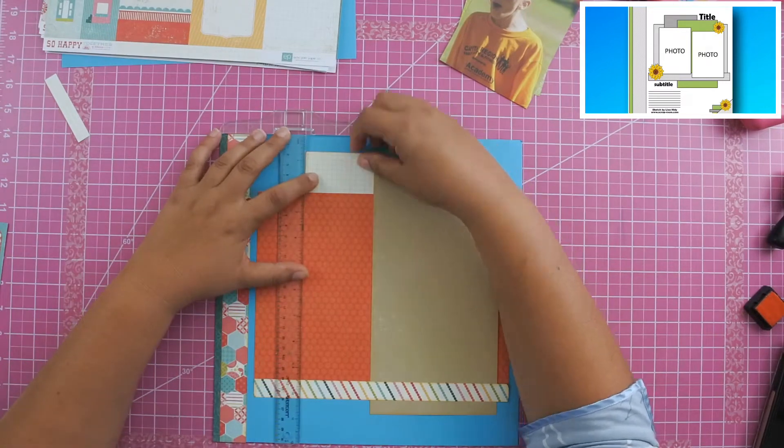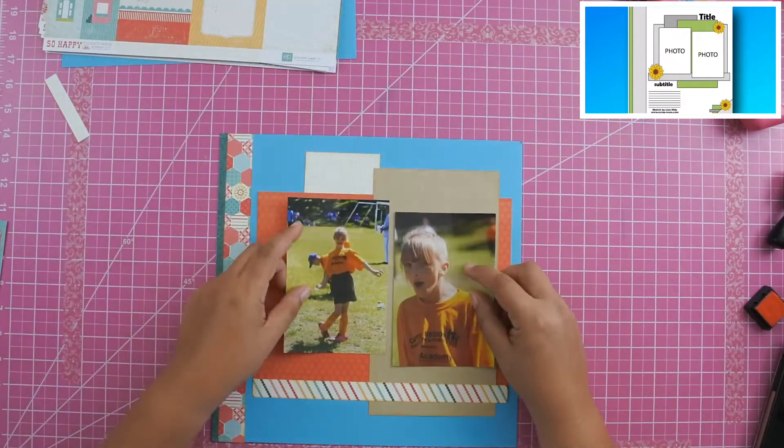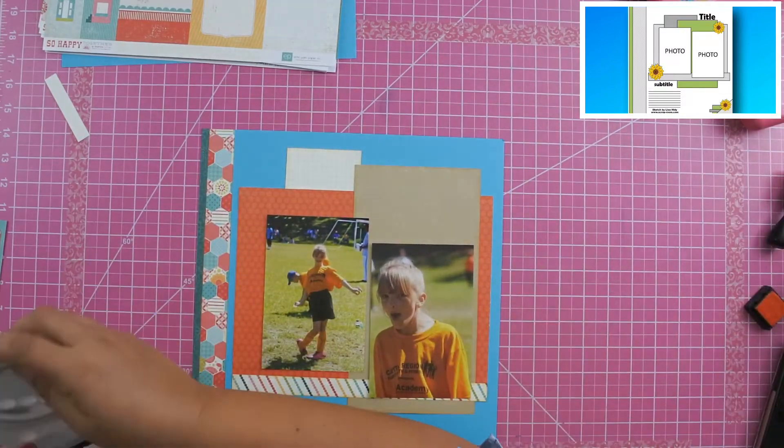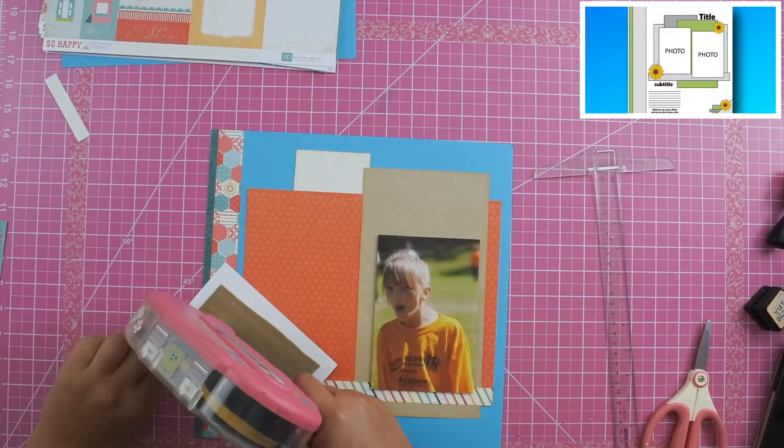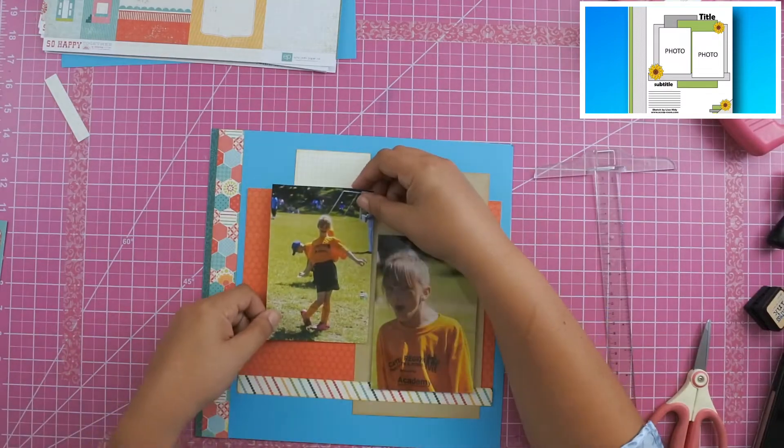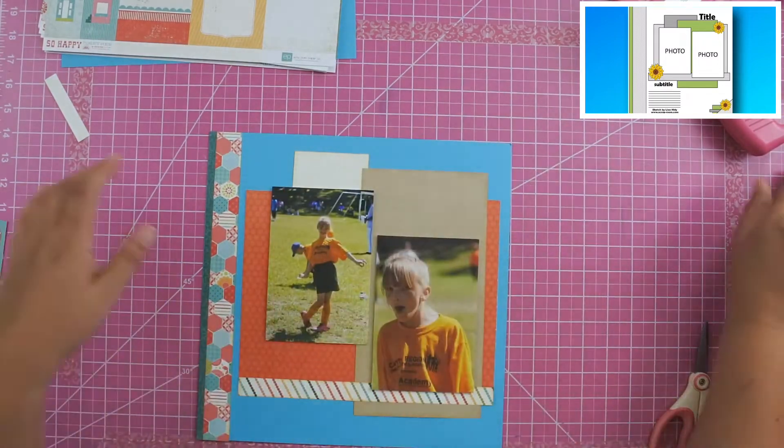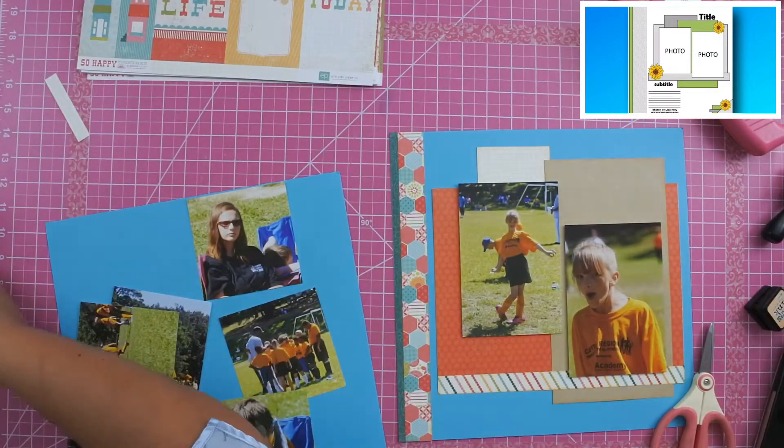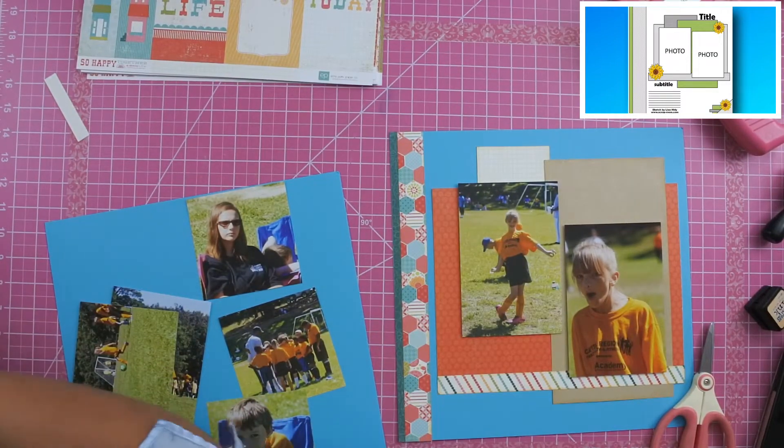I do use fun foam on both of the photos because there's so many layers in this. I just wanted to make sure that I showcased those photos and those photos really stood out. What I did was I took that green paper, the tone on tone green paper, and I expanded it to the left side of the layout.